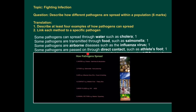Some pathogens are passed on through direct contact, such as athlete's foot, which is a fungus. For example, if someone uses a towel to dry their feet and they have athlete's foot, some of the fungal spores might go onto that towel. Then when you dry yourself with it, you can pick up those spores and become infected.